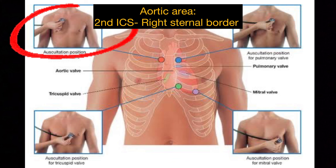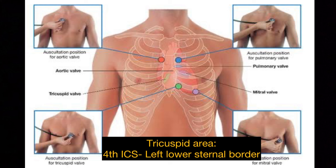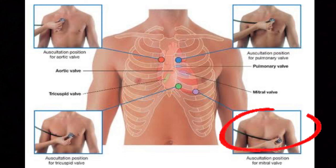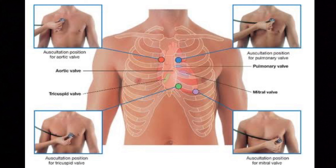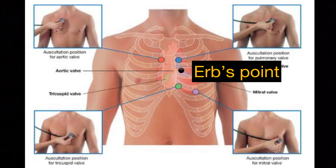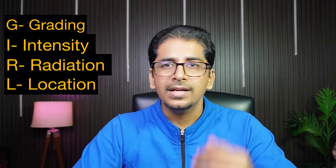The five auscultation locations are: first, the aortic area — second intercostal space, right of the sternum; second, the pulmonic area — second intercostal space, left of the sternum; third, the tricuspid area — fourth intercostal space, left of the sternum; fourth, the mitral or apical area — fifth intercostal space at the mid-clavicular line; and fifth, Erb's point, also called the neo-aortic area.